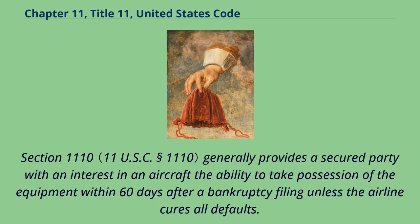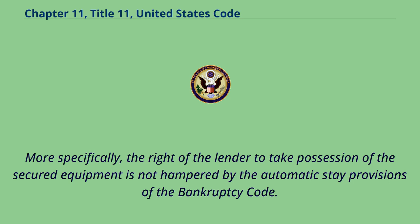Section 1110 generally provides a secured party with an interest in an aircraft the ability to take possession of the equipment within 60 days after a bankruptcy filing, unless the airline cures all defaults. More specifically, the right of the lender to take possession of the secured equipment is not hampered by the automatic stay provisions of the Bankruptcy Code.